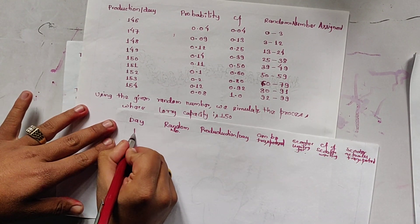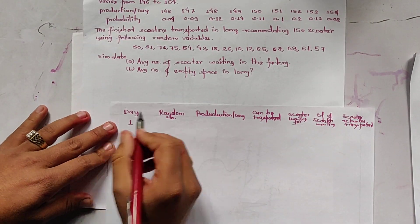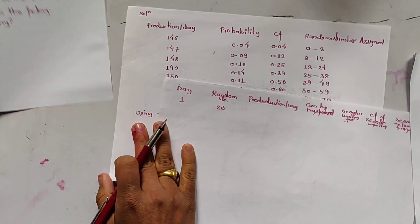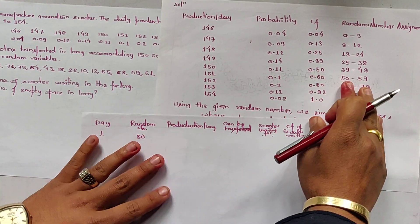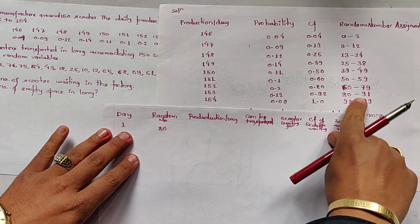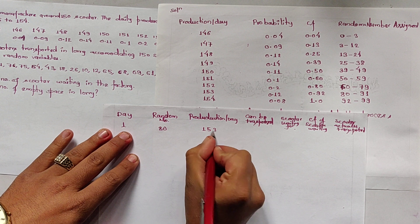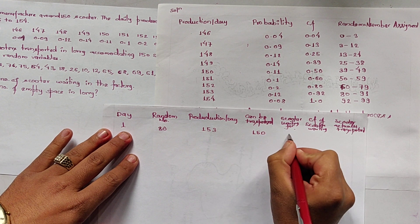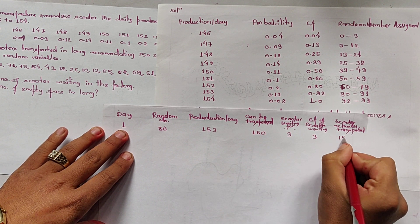Day 1: random number is 80. 80 lies in the range 80 to 91, so production per day is 153. Can be transported is 150. Scooters waiting is 3. Cumulative waiting is 3. Actually transported is 150.